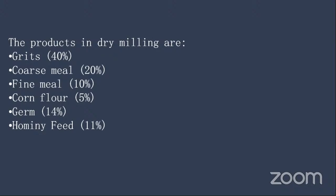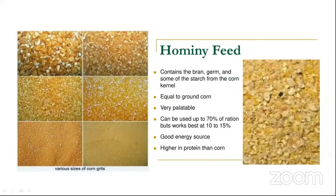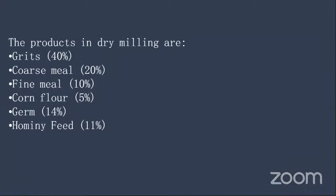From dry milling, the products obtained are: grits (around 40%), coarse meal (around 20%), fine meal (around 10%), germ (around 14%), corn flour (only about 5%, because obtaining flour is not the aim of dry milling), and hominy feed (around 11%). The different grades of grits have varying particle sizes — from large grits down to the finest.